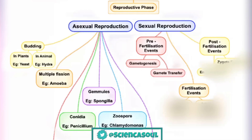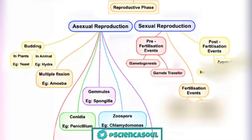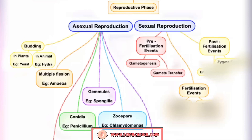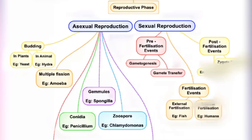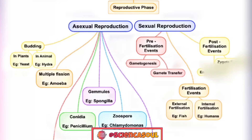The first event, pre-fertilization, includes two parts: gametogenesis and gamete transfer. Gametogenesis refers to the process of formation of two gametes — male and female — and gametes are haploid cells. Gamete transfer is the process of bringing together male and female gametes for fertilization through different means; for example, pollination is a form of gamete transfer.